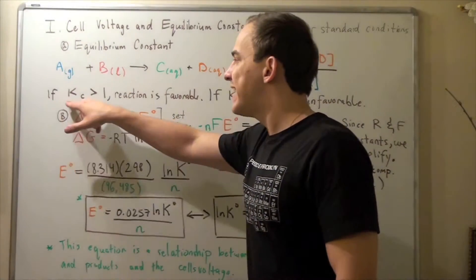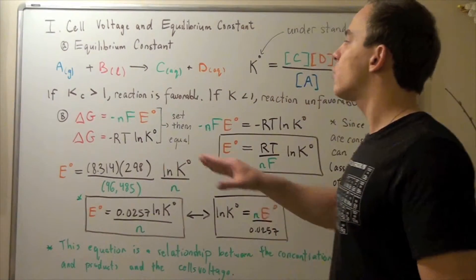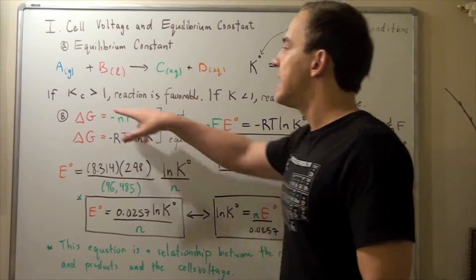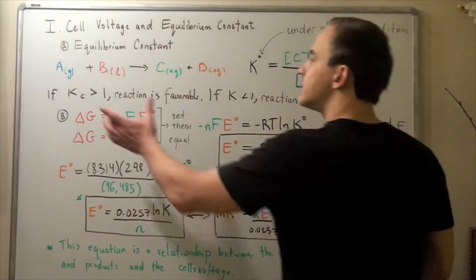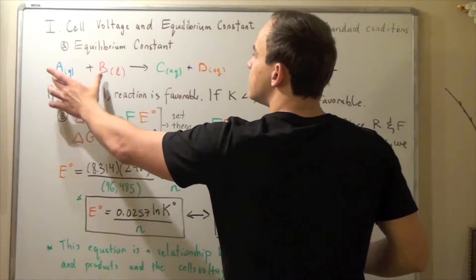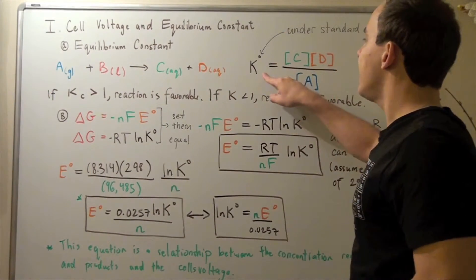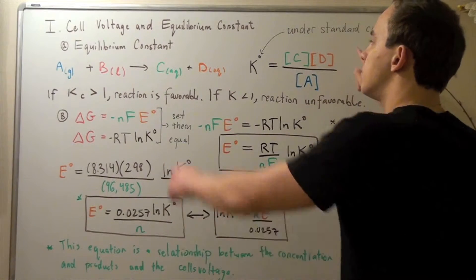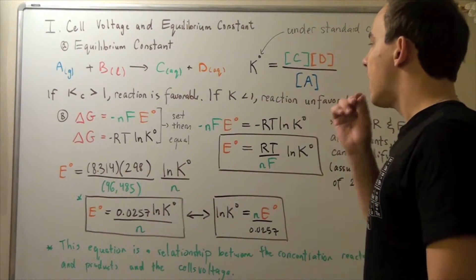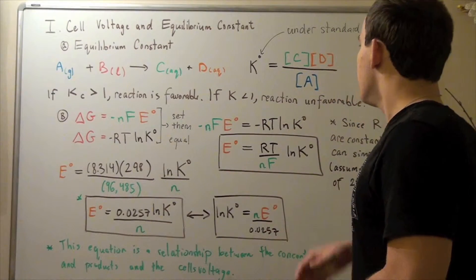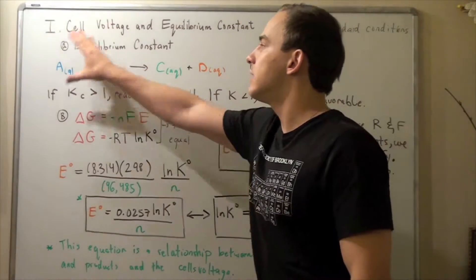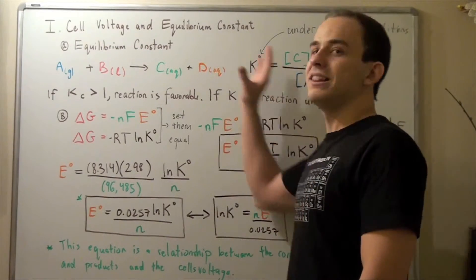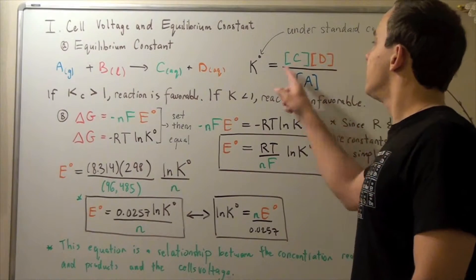If K is greater than 1, our reaction is favorable. If K is less than 1, our reaction is unfavorable. If K is much larger than 1, equilibrium lies to the right — the reactants completely react to form products, so we have very little of A and a lot of C and D. Likewise, if K is much less than 1, we have a lot of reactant left at equilibrium and very little product formation, meaning equilibrium lies to the left.